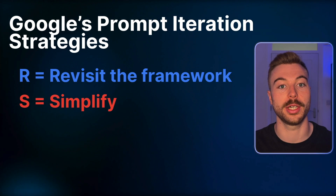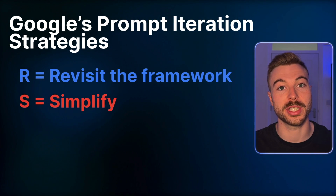Next up is simplify for the S. Do we need to break this down and go step by step? This relates to our chain of thought prompting, which we'll cover later in the video. Breaking it up into more manageable chunks will help us get the output we're looking for.